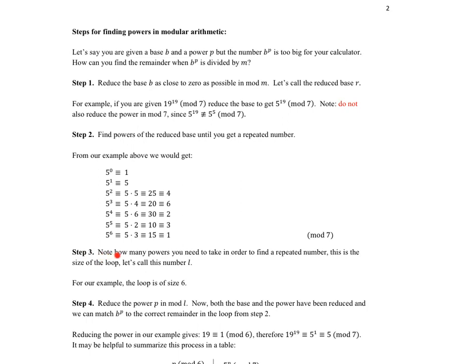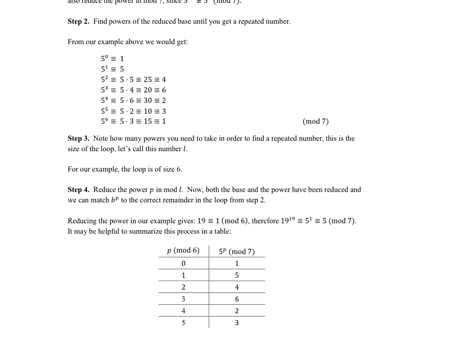In step three, we note how many powers we needed to take to find that repeated number. Above, we went 1, 2, 3, 4, 5, 6 — so we note the number 6. That was how many we needed for this pattern to appear. We call that the loop size, so for this example the loop is of size 6. Finally, step four: we reduce the power in the mod that corresponds to the loop size. That's how we reduce the power and find our final answer. Both the base and the power have now been reduced once we complete step 4.